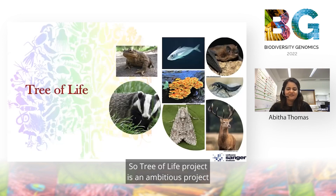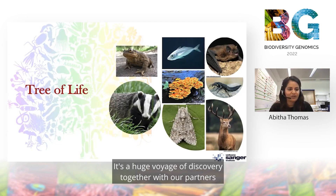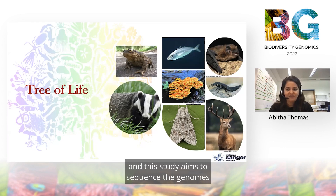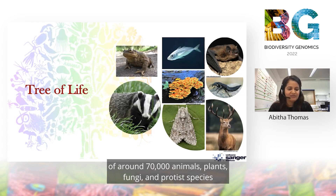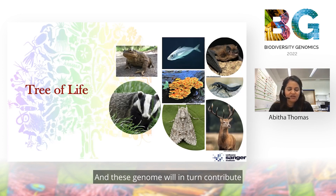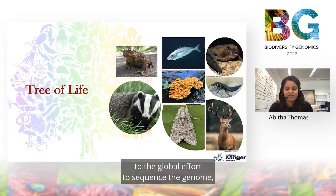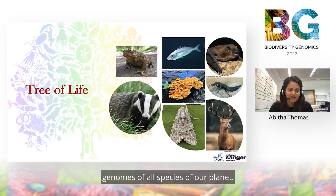The Tree of Life Project is an ambitious project — a huge voyage of discovery — together with our partners. This study aims to sequence the genomes of around 70,000 animals, plants, fungi, and protist species found in Britain and Ireland. These genomes will in turn contribute to the global effort to sequence the genomes of all species on our planet.